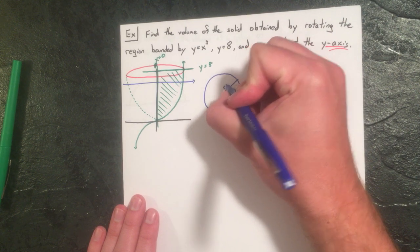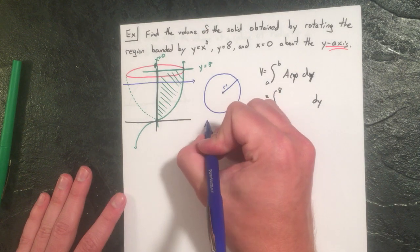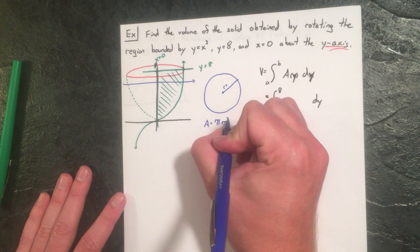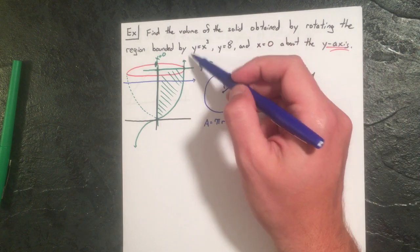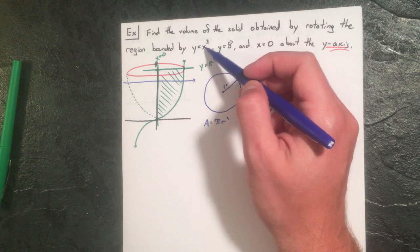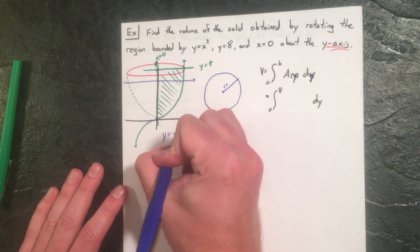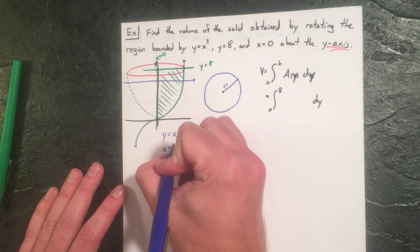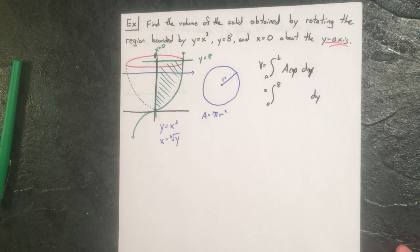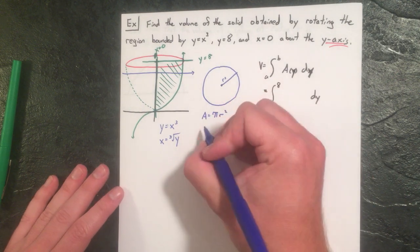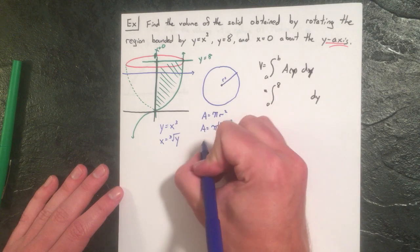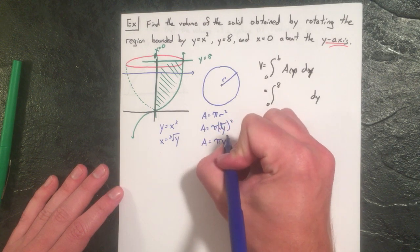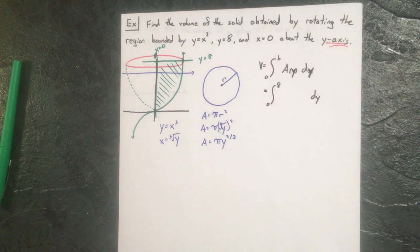We need the radius of that circle. Since we're with respect to y, we rewrite y = x³ as x = ∛y (cube root of y). So the radius is ∛y. The area is π r² = π(∛y)² = π · y^(2/3).